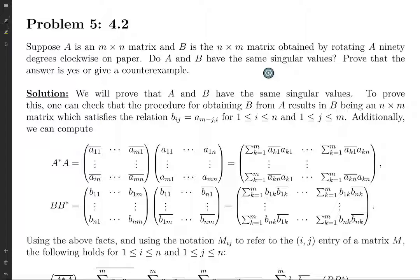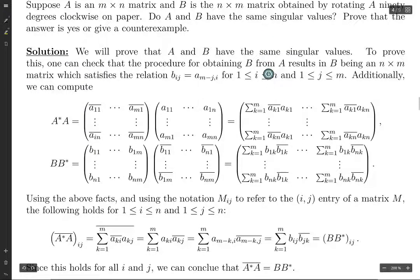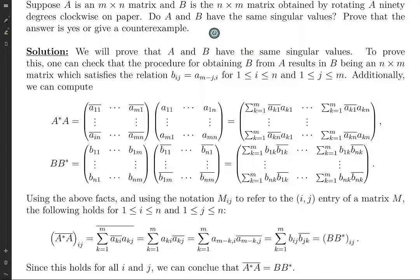By messing around with them in MATLAB, I noticed that the complex conjugate of A star A is equal to B times B star. That seemed interesting, and it turns out that's how you solve this exercise. So we are going to prove that A and B do have the same singular values.